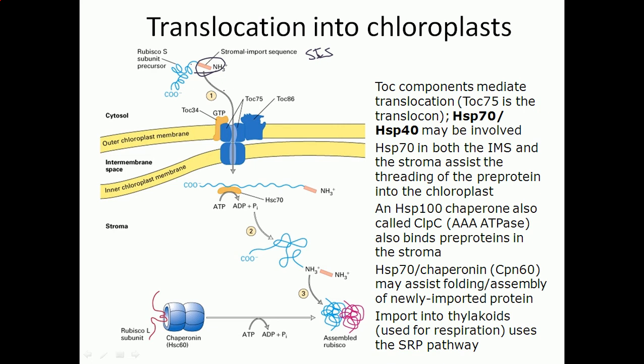Once it has this, it will bind with the transporter, the channel that is present on the membrane of chloroplasts. That channel is simply termed TOC. There are different varieties of that TOC protein, like TOC75, TOC34, TOC86.